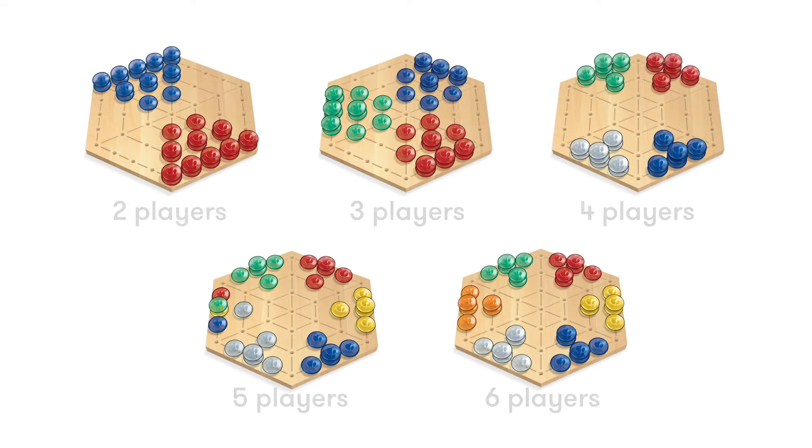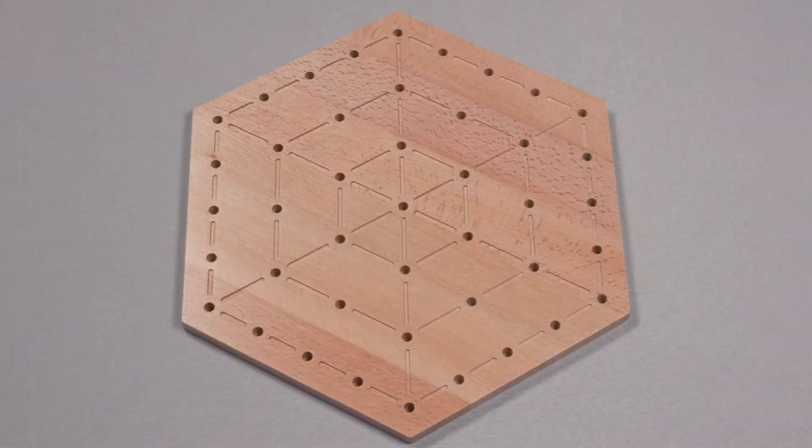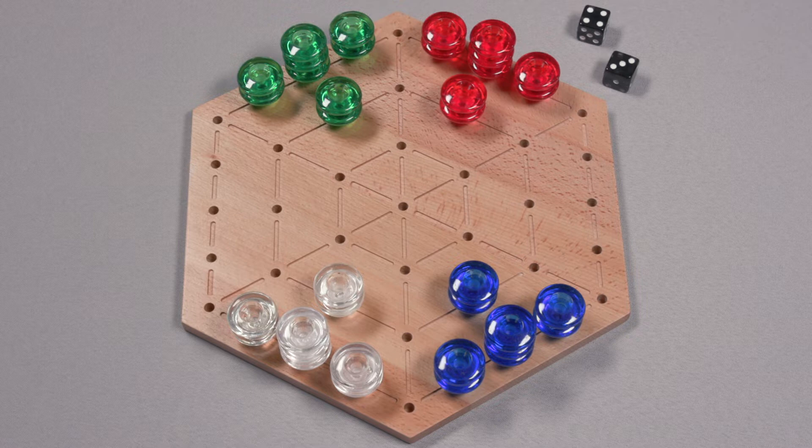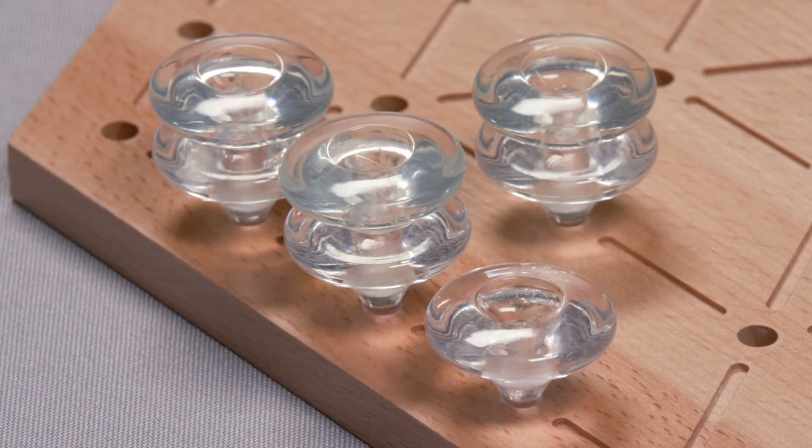The starting position setup changes according to the number of players. Refer to the rules for setup options. For a 4-player game, each player takes 9 pieces in the available color of their choice and places them on the game board.